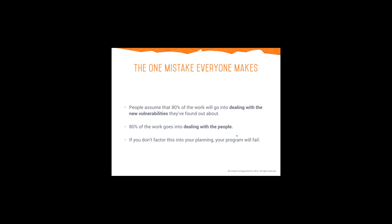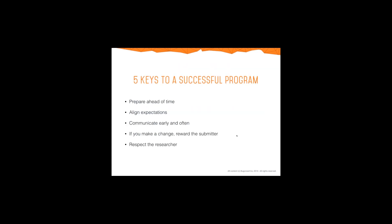Now I'm going to hand over to Jonathan Cran. We're really excited to share with you some of the keys to a successful program. Bug Crowd has run over a hundred programs over the course of the last two years. There's a lot of detail in running a program, and it really comes down to these five keys: prepare ahead of time, align expectations, communicate early and often, make a change and when you should reward a submitter, and respect the researcher. Let's get started with preparation.